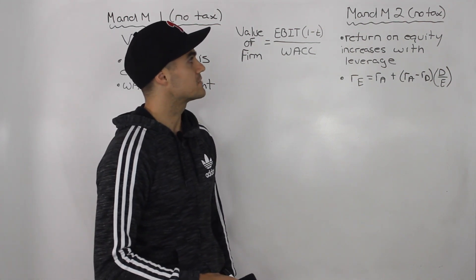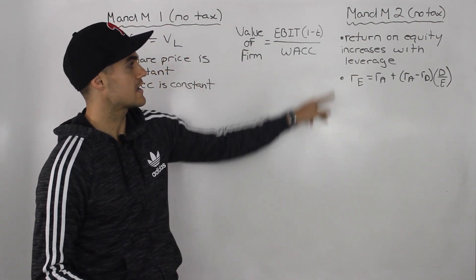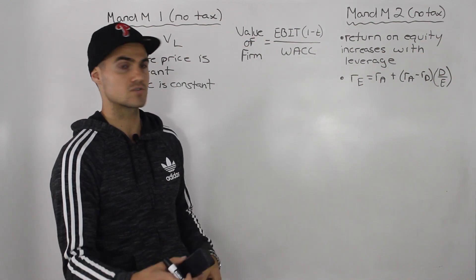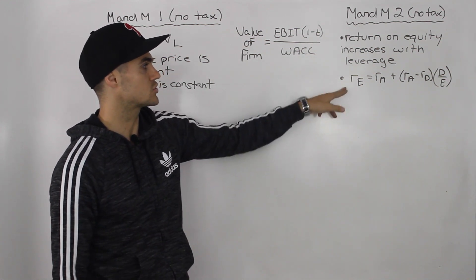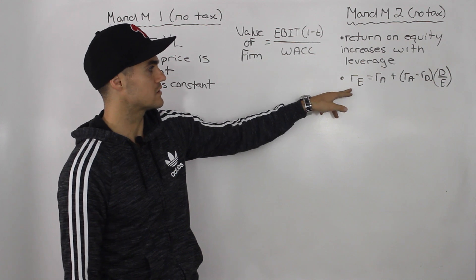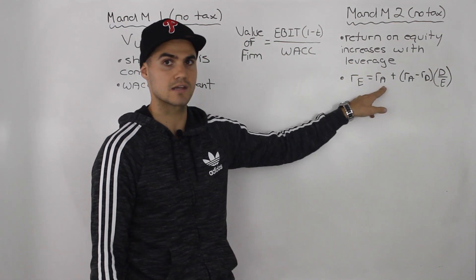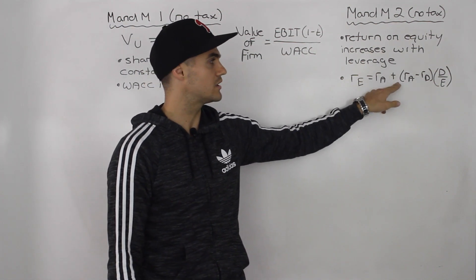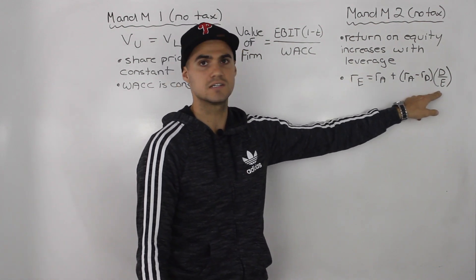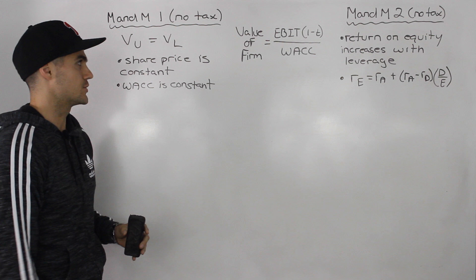M&M Proposition 2 with the no tax case concluded that the return on equity increases with leverage, and we showed that through a formula: the return on equity equals the return on assets plus the return on assets minus the return on debt, times the debt to equity ratio. So now I want to start off by expanding on the value of an unlevered firm.